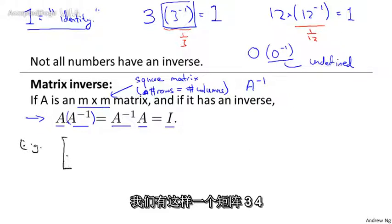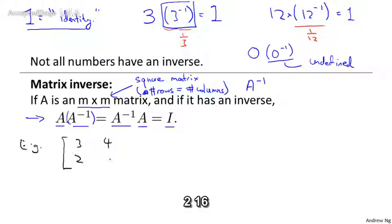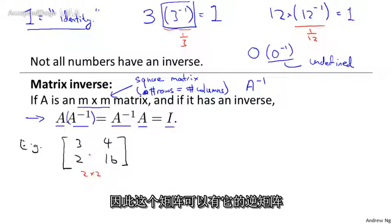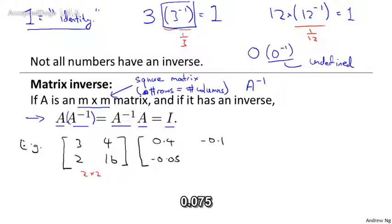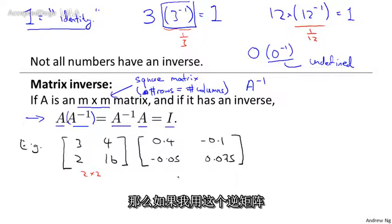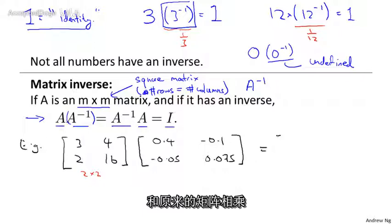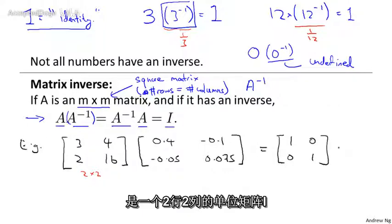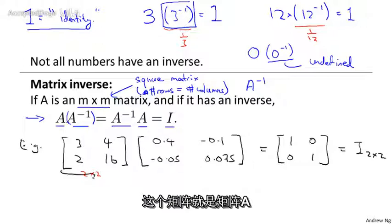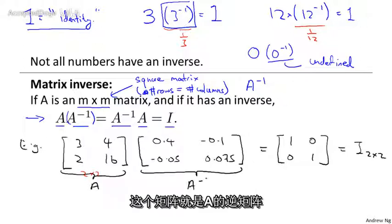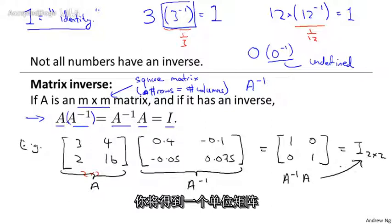So let's say I have a matrix [3, 4; 2, 16]. So this is a 2 by 2 matrix, a square matrix, so this matrix could have an inverse. And it turns out that I happen to know the inverse of this matrix is [0.4, -0.1; -0.05, 0.075]. And if I take this matrix and multiply these together, it turns out what I get is the 2 by 2 identity matrix I. And so on this slide, this matrix is the matrix A, and this matrix is the matrix A inverse. And it turns out that here I've computed A times A inverse. It turns out if you compute A inverse times A, you also get back the identity matrix.